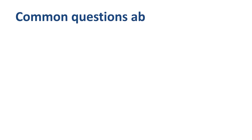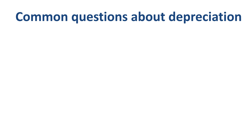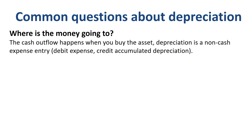Some common questions about depreciation that get asked in finance and accounting courses all the time. Where is the money going to? The cash outflow happens when you buy the asset. Depreciation is a non-cash expense entry — debit expense, credit accumulated depreciation.